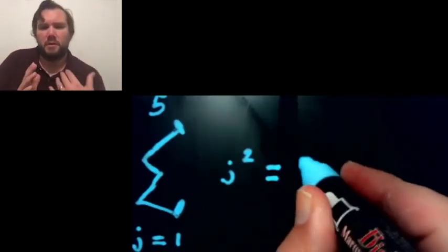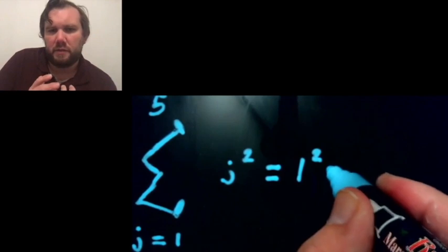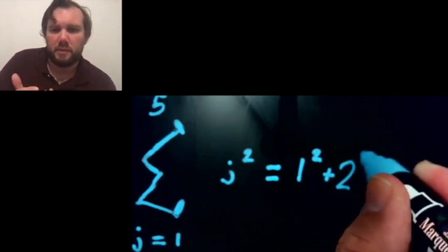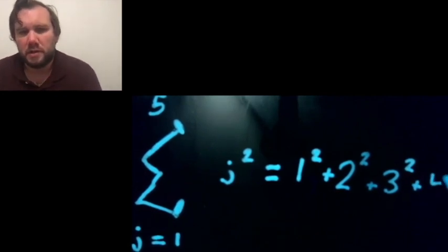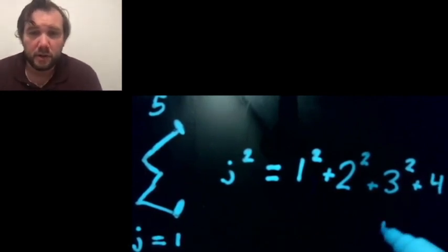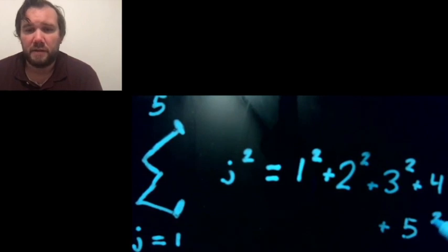Now what we're going to do is take each value of j from the start to the stop and apply the expression. So here I'm going j squared from 1 to 5. So I'd have 1 squared plus 2 squared plus 3 squared plus 4 squared plus 5 squared.